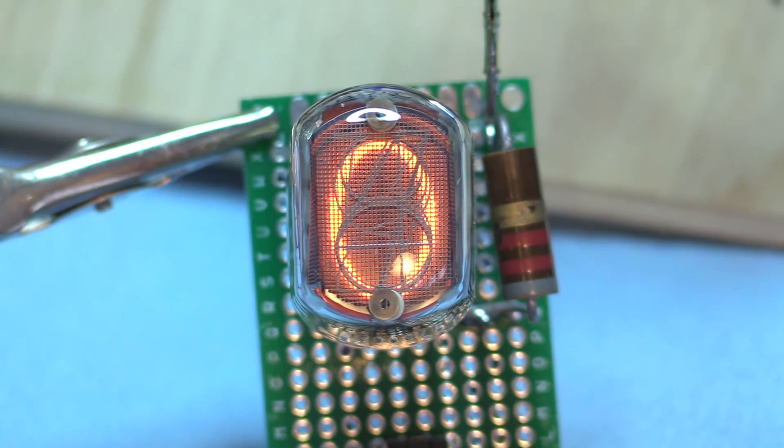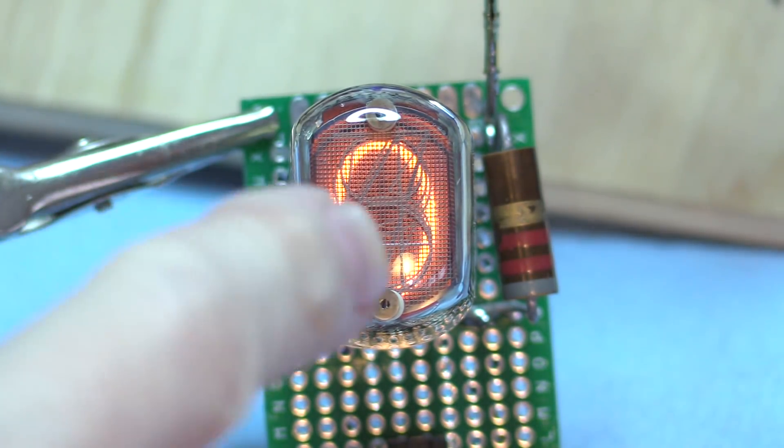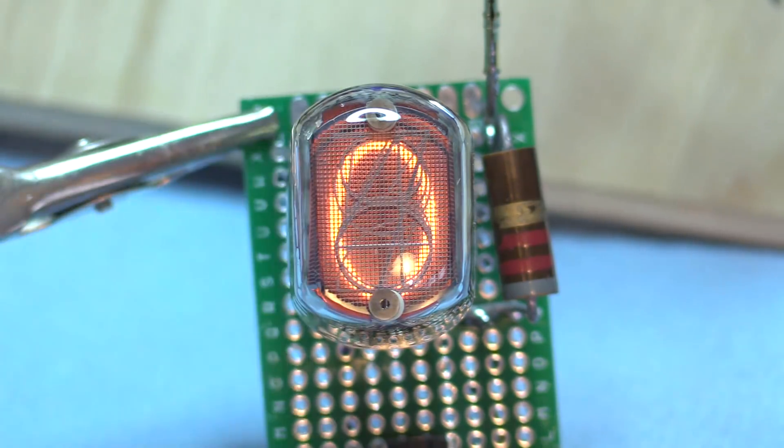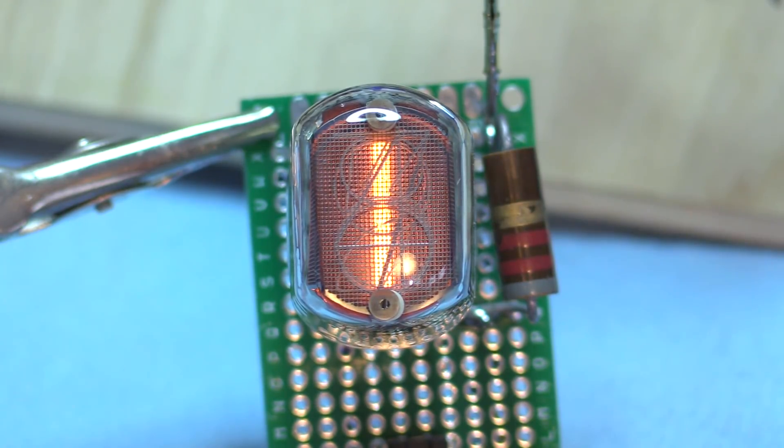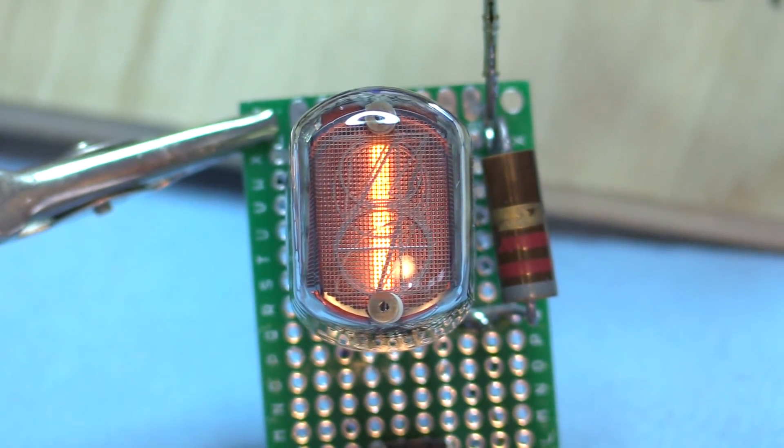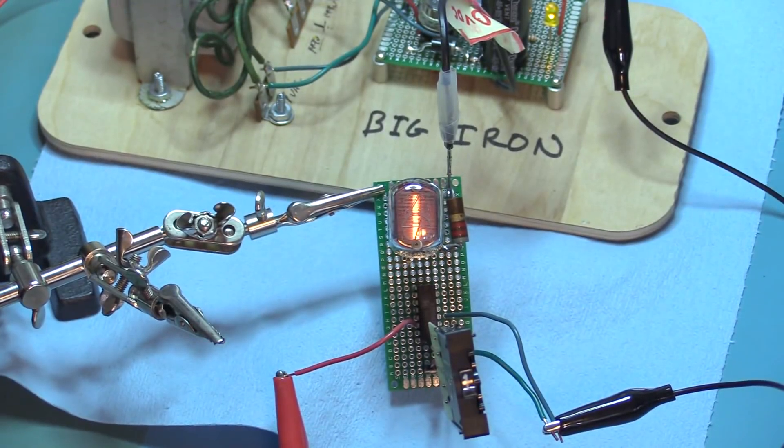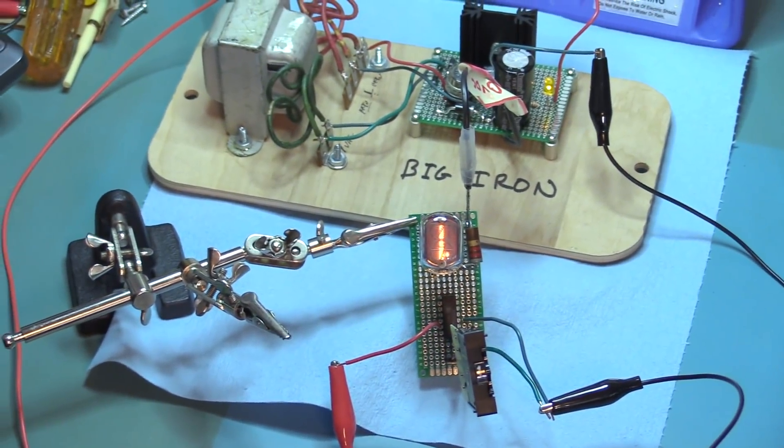Nothing like having a real Nixie supply. You notice that there's no blue haze in there, it's not purple or anything like that. It's just a real solid 200 volt supply, which is what you want, thanks to big iron.